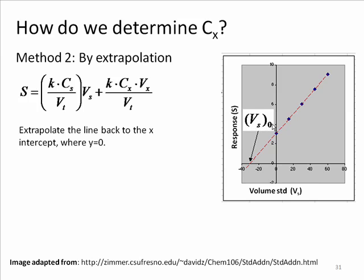where the response is 0. And we'll call that intercept the volume of the standard v sub s at 0 signal. Volume of the standard at 0 signal. We take this equation, simplify it down to that very point. So s is equal to 0. And for v sub s, we'll put v sub s 0.